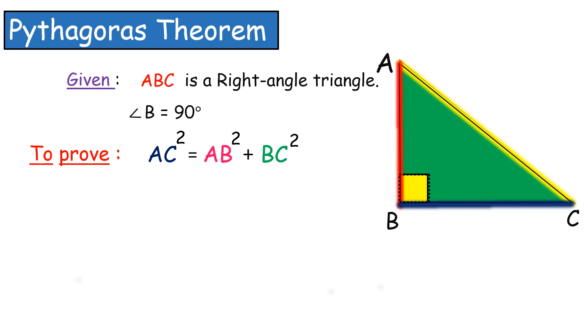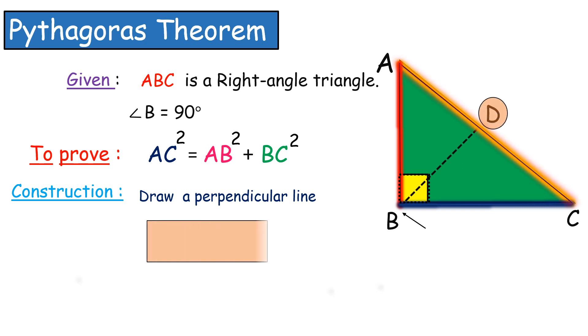Now, to prove this theorem, we are going to make a little construction. From B, draw a perpendicular line BD, meeting the line AC at D. We simply write it as BD perpendicular to AC.